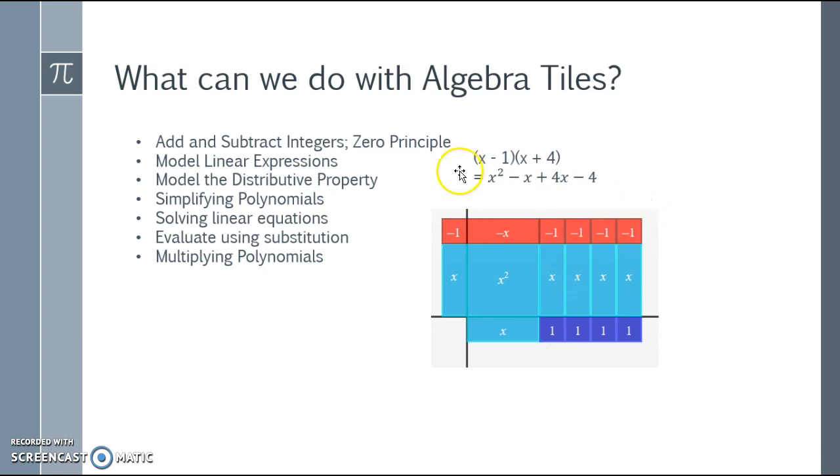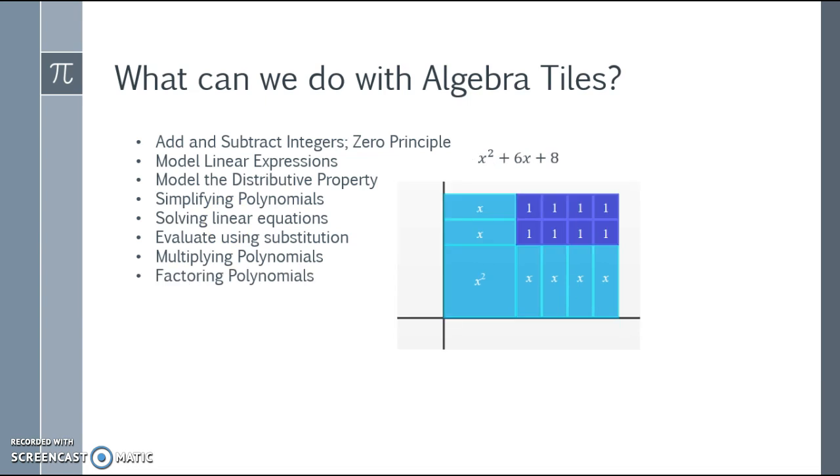So I see I end up with an x squared, one negative x, four positive x's, and negative four units. Combining like terms, because I do see I have a zero pair here, I end up with x squared plus three x minus four.